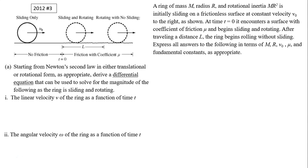A ring of mass m, radius r, and rotational inertia mr² is initially sliding on a frictionless surface at constant velocity v₀ to the right, as shown.